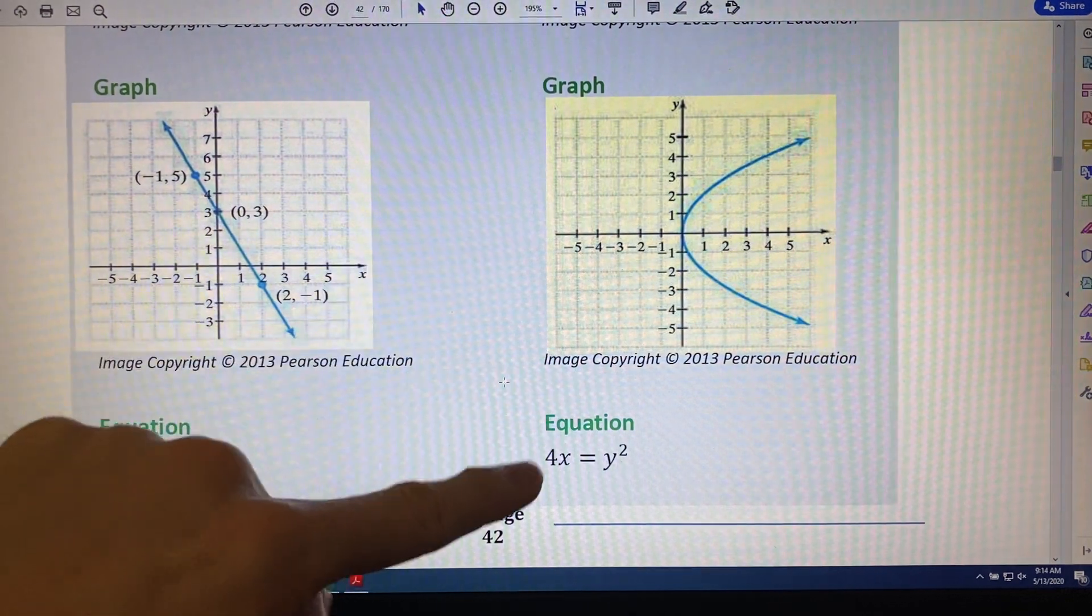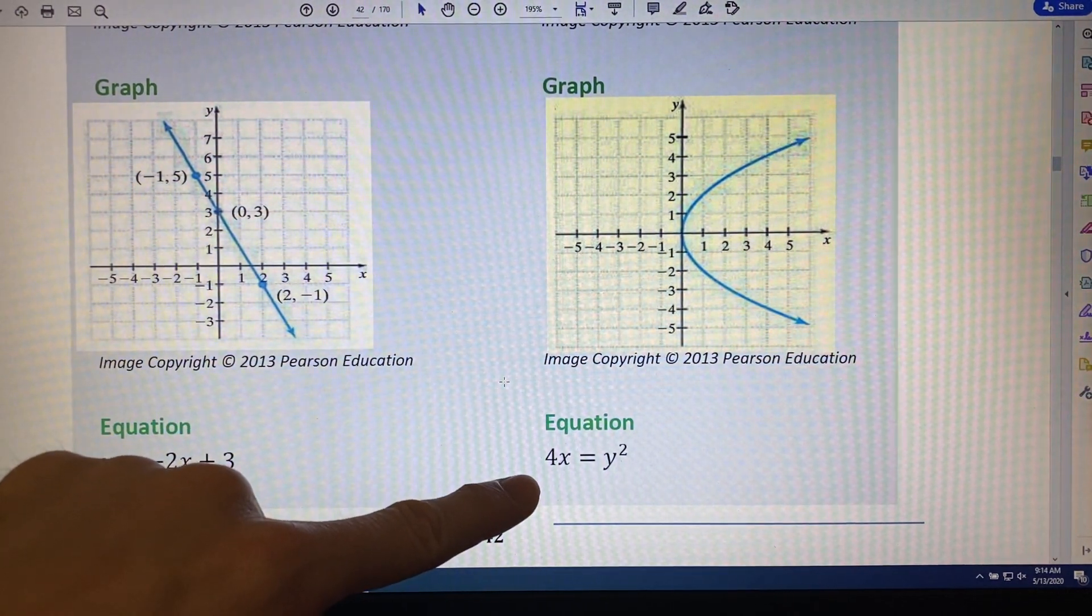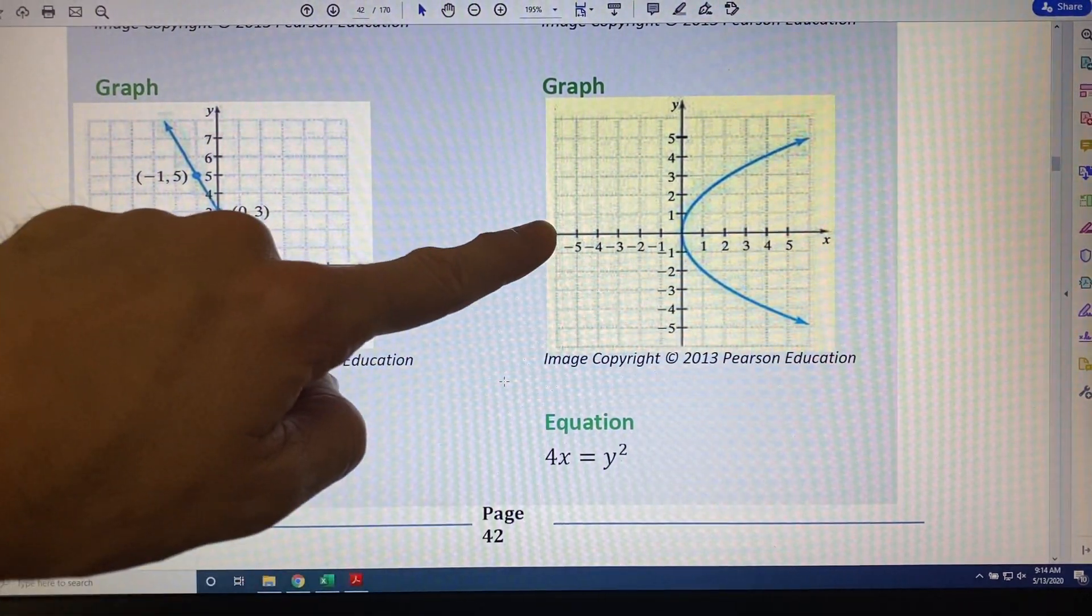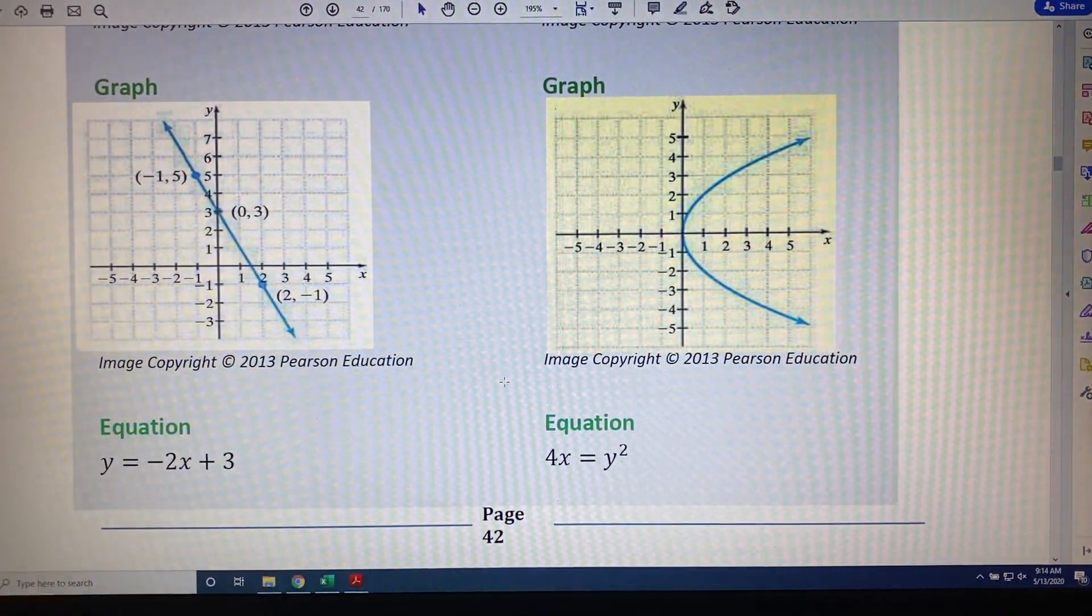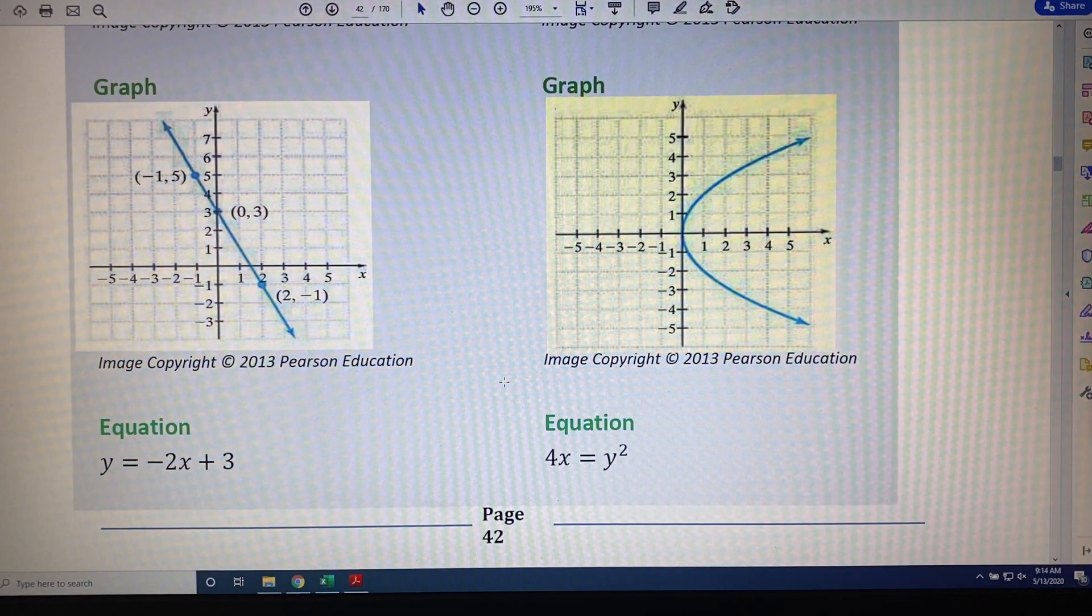Turning our attention over to this last equation, 4x equals y squared. When graphed gives us this picture. And since that picture fails the vertical line test, this equation is not a function.